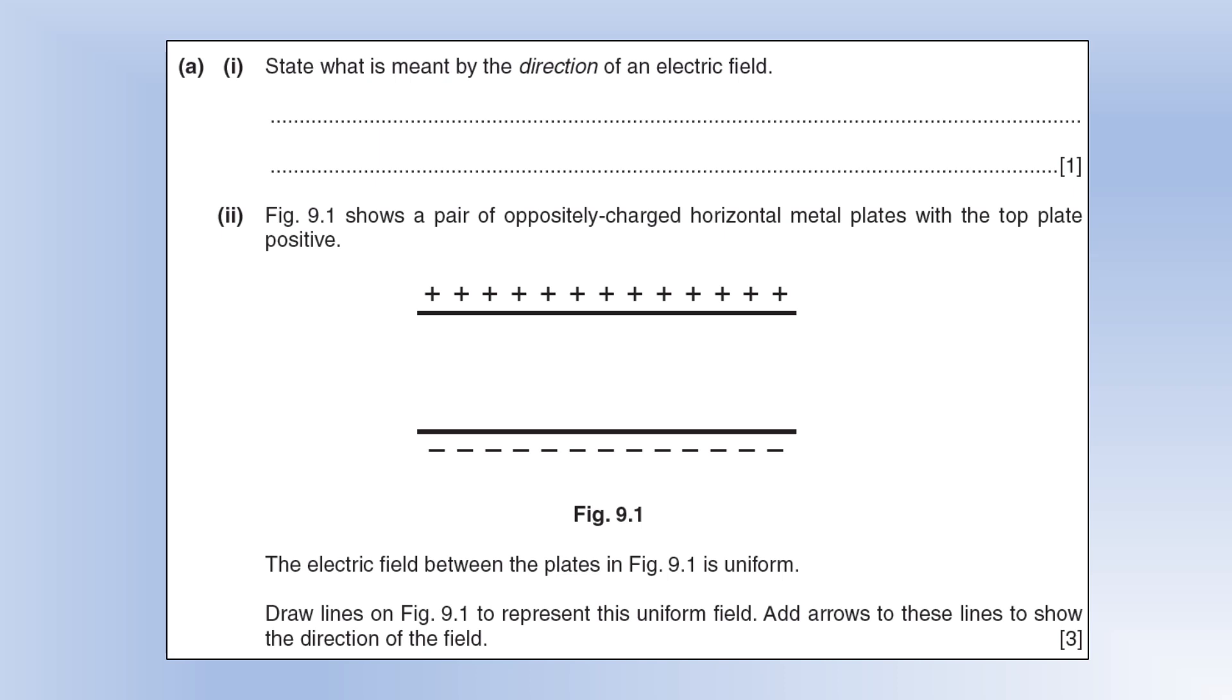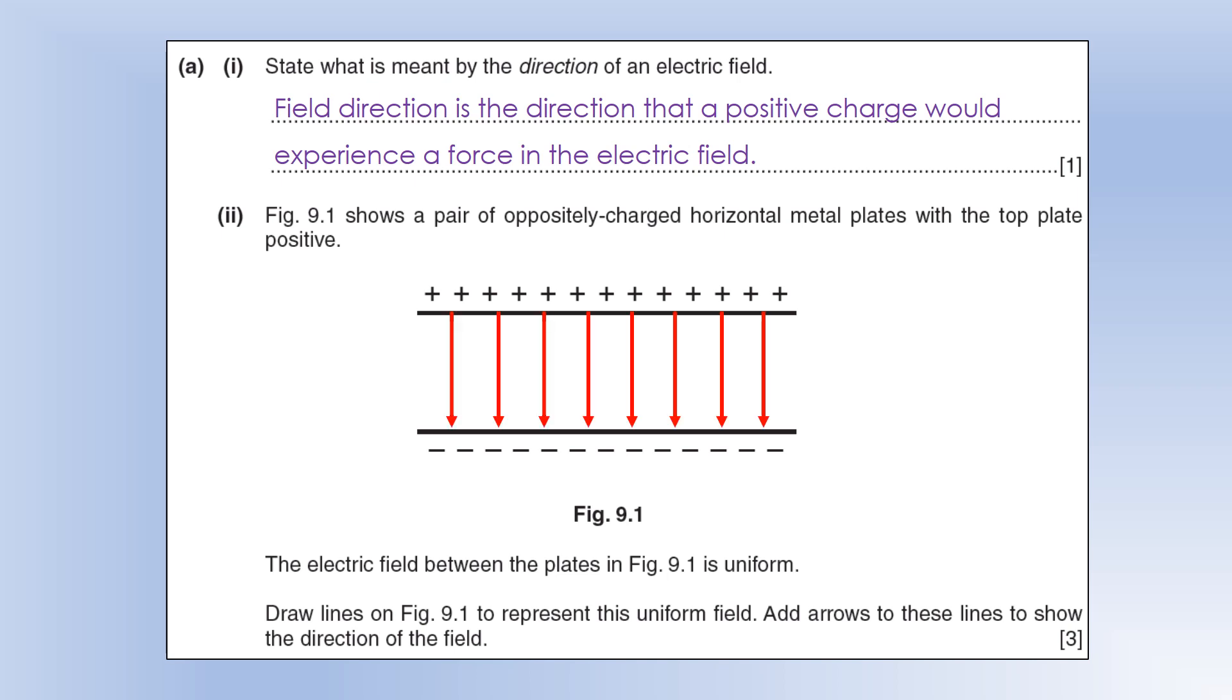State what is meant by the direction of an electric field. It's the direction that a positive charge would experience a force. We've got a pair of oppositely charged metal plates, and the top plate is positive. We've got a uniform field. Draw the field lines to represent this. We're going to get something that looks like this. Field lines go from positive to negative, because that's the direction a positive charge would experience a force.